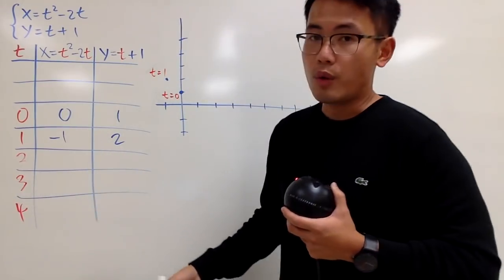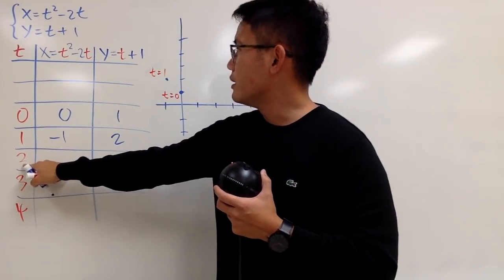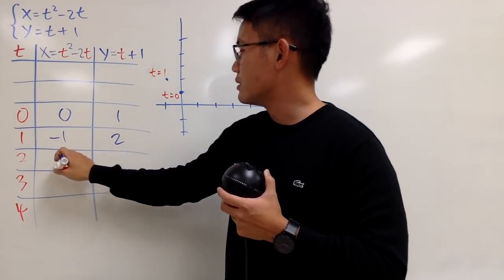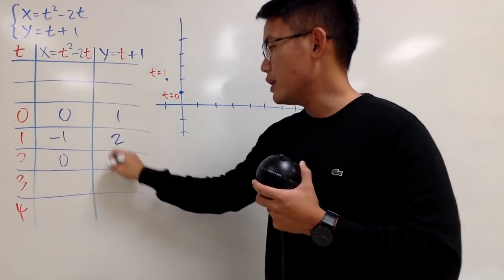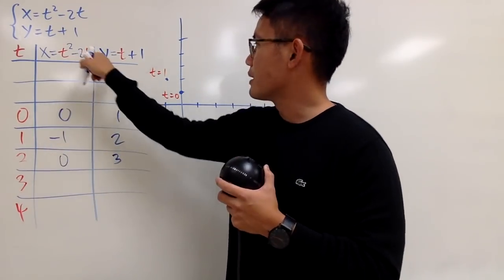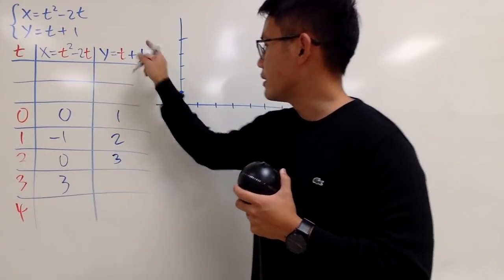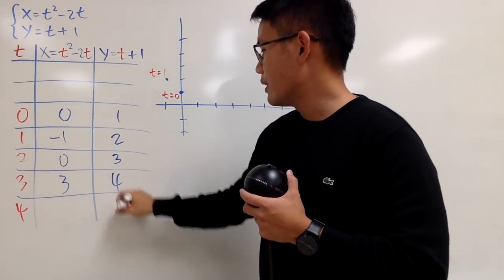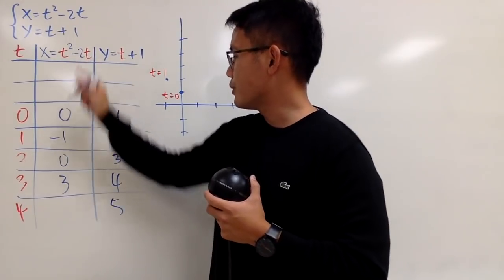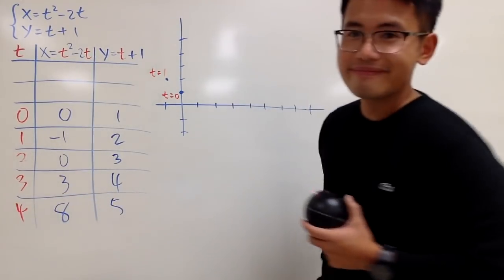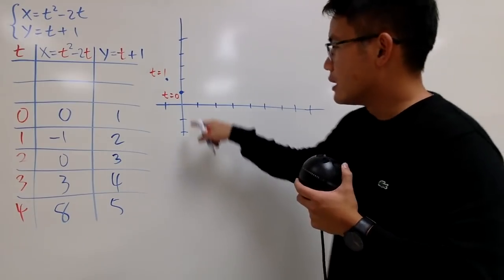When t is 2, plug in and you get x equals 0, and y equals 3. When t is 3, that's 9 minus 6, which is 3, and y equals 4. When t is 4, plug in and you get x equals 8 and y equals 5. Now we just plot the points.